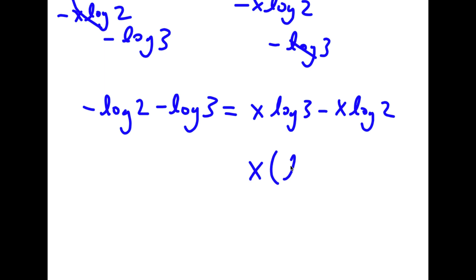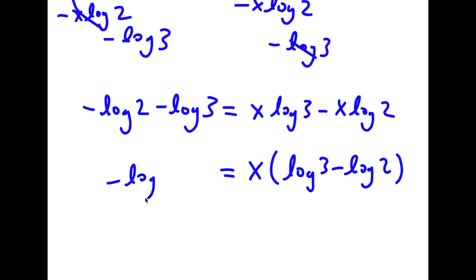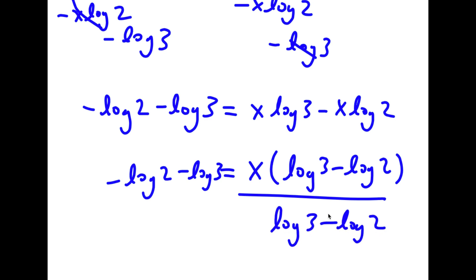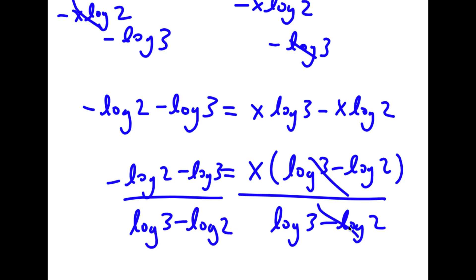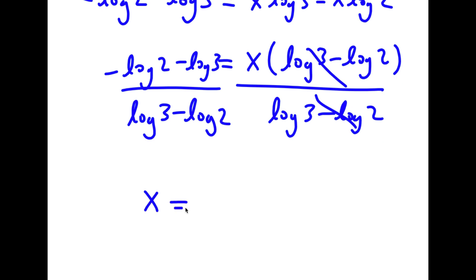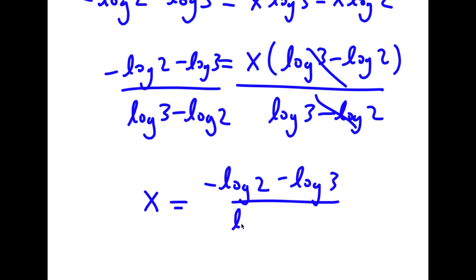Now, I'm going to subtract x times log 2 on both sides and add log 2 on both sides. So then these two cancel out, these two cancel out, and I have negative log 2 minus log 3 is equal to x times log 3 minus x times log 2. Now, if I factor out x from here, I get x times log 3 minus log 2 is equal to negative log 2 minus log 3.